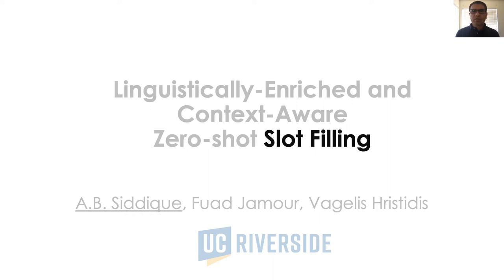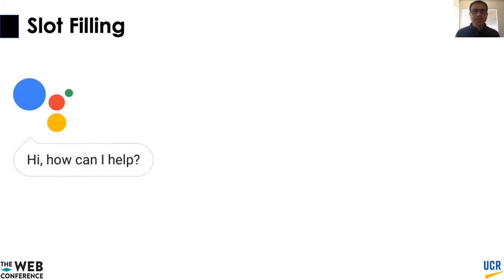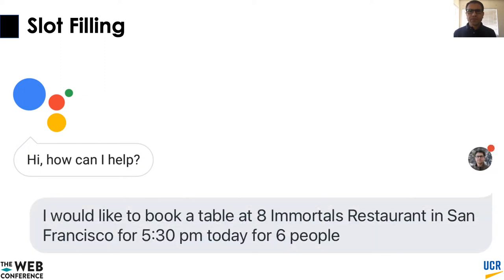Before I talk about Zero-Shot Slot Filling and our model, let us understand what slot filling is. When you interact with any conversational AI system, especially goal-oriented ones such as Google Assistant, the system tries to fulfill your request. For the system to do that, it needs to extract your request parameters, or in other words, slot values. For example, if you say: I would like to book a table at 8 Immortals Restaurant in San Francisco for 5:30 pm today for 6 people.